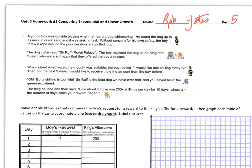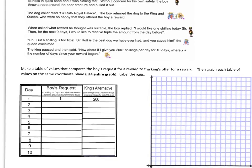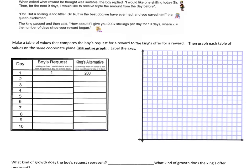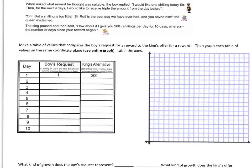It says make a table of values comparing the boy's request to the king's offer for a reward. So let's start with the king's offer. It's kind of easy. We know that he says it's 200 a day. So it's 200 the first day as we see and it's 200 the second day. And 200 the third day. And etc.